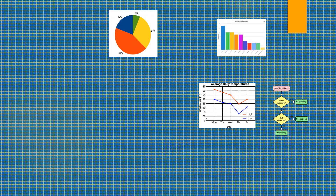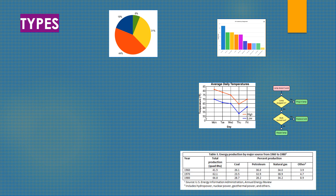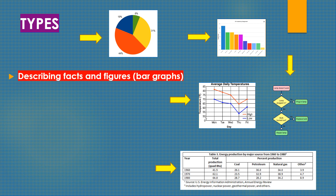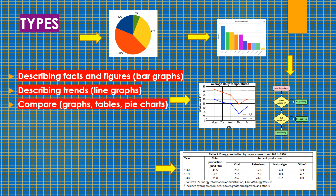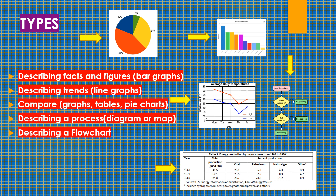Now let's take a look at the types of graphs that can appear: a bar graph, a line chart, a table, a pie chart, a flow chart. Use bar graphs to describe facts and figures, line graphs to describe trends, tables and pie charts for comparisons, and flow charts or maps to describe a process or diagram.